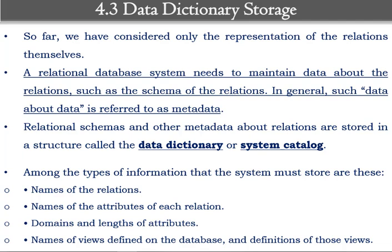Metadata means data about the relation. For example, if you are having a student database, you should know certain things about it: how many tuples that student database is holding, how many attributes it is having currently, how many bytes that student database has occupied in memory. So this is the data about a relation. We call this metadata, and data dictionary storage holds these different contents.